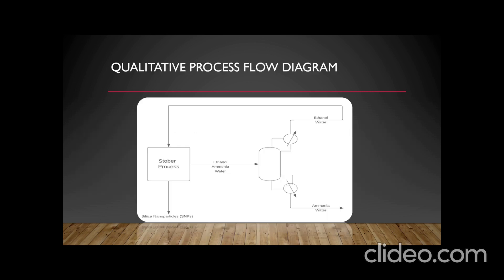Our process flow diagram consists of a single distillation column that will theoretically create an ethanol stream with close to 100% purity. The ethanol, ammonia, and water waste stream is sent into the tray distillation column where ethanol is separated from ammonia. The ethanol-water product stream is sent back into the Stober process to be reused, while the ammonia-water waste stream is sent out. It is assumed that all TEOS is converted into SNPs, SNPs are completely separated from the waste stream, and ammonia is completely separated from the ethanol. A more in-depth analysis on Aspen would be needed to determine the number of stages, reflux ratio, and purity of the ethanol stream.